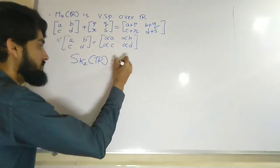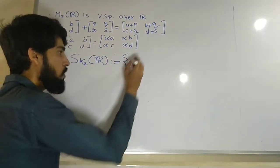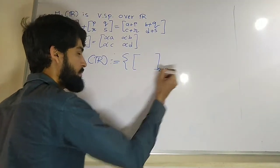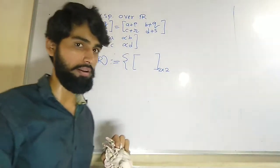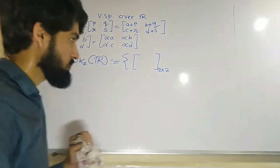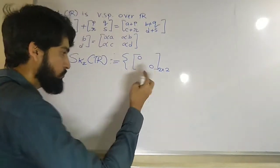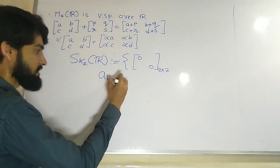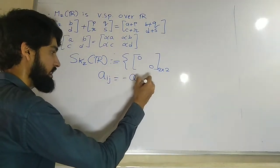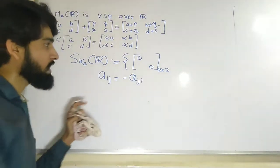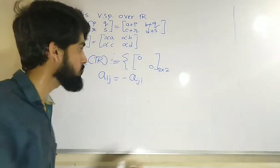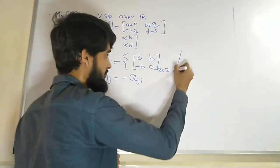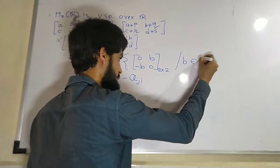So let us just define what is the skew symmetric matrix and how the set will look like. We use the notation SK2R. This represents set of all 2 by 2 skew symmetric matrices. Skew symmetric matrix has a property that if you flip it you get the negative, means you know that Aij is same as minus Aji.